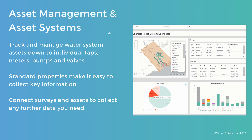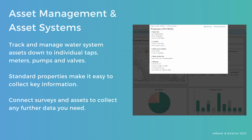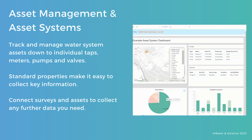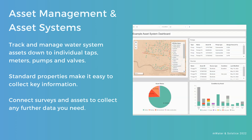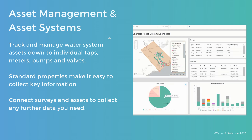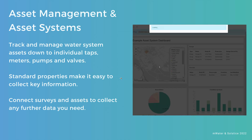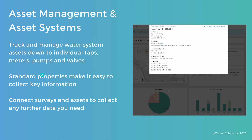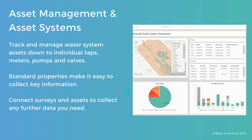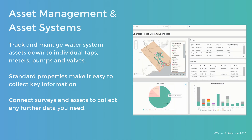The big release from 2022 is undoubtedly asset management and asset system features in MWater. These allow you to track and manage water system assets down to the level of individual taps, meters, pumps and valves — all kinds of parts that you might want to track in a water system. This is an implementation of MWater's asset management standard, with standard properties for each asset type, making it easy to collect key information. Those fields are already defined, so you can pick up the free functionality and start mapping your water utility assets.